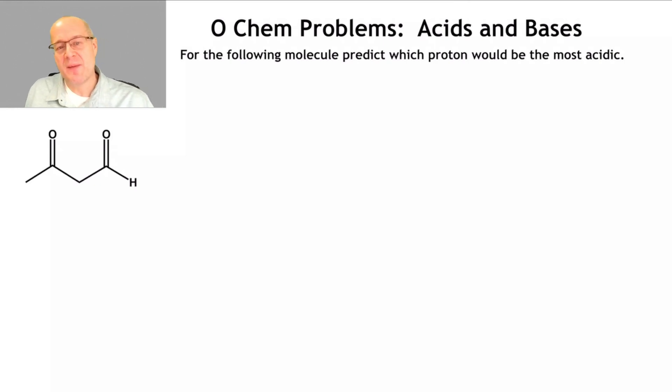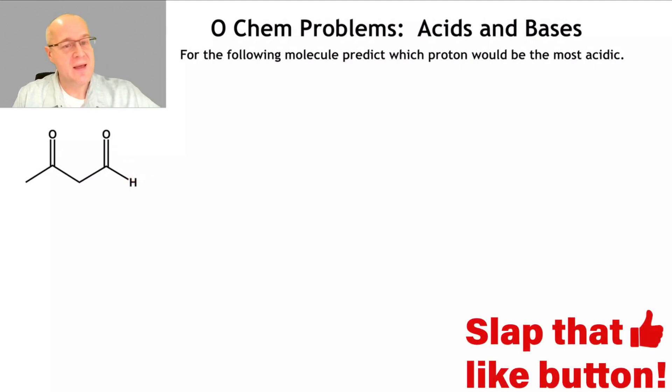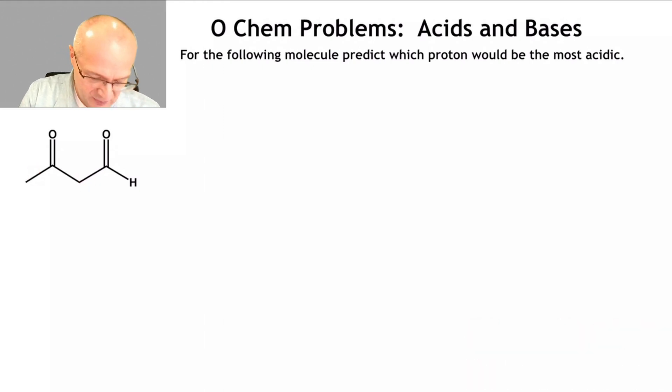Now we have to decide how many different types of protons are there. Well, there's the aldehyde proton, there's the methylene, and the methyl. So there's three types of protons. Now I'm going to give you some information real quick. Aldehyde protons are not acidic. For reasons we'll get into some other video, perhaps, but they're not acidic. So let's just leave the aldehyde out of this. Let's talk about the methylene versus the methyl.